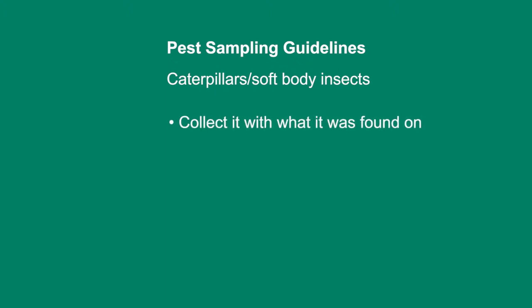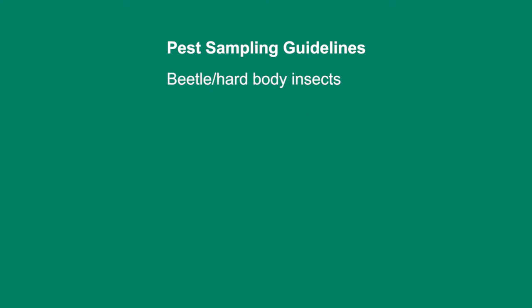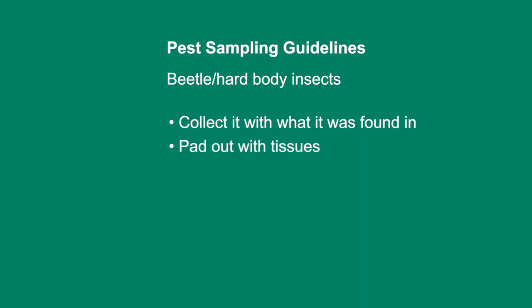For instance, if it was found on canola leaves, collect it with the canola leaves, put it into a plastic container with micro pinpricks like with a needle in the lid, and pat it out with tissues to absorb the moisture. Send it in early in the week. If it's a hard-bodied insect like a beetle found in the soil, put it in with the soil, pat it out with some tissues and send it in.